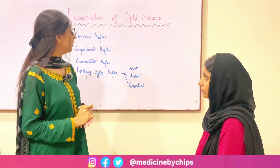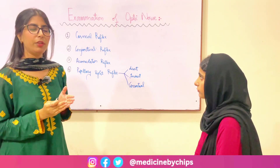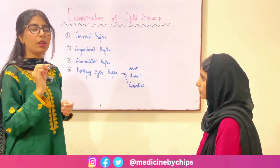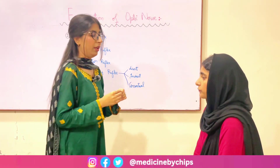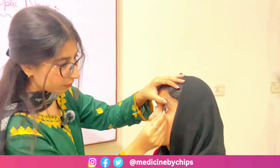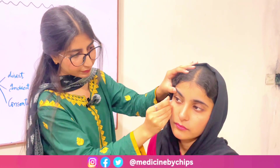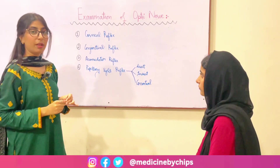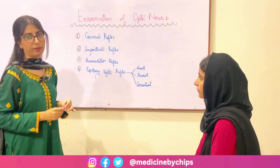Now starting with the second reflex, which is the conjunctival reflex. It is basically the same as the corneal reflex with only one difference: in the conjunctival reflex we have to touch the tip of the cotton not at the junction of the cornea and conjunctiva, but purely on the conjunctiva. The afferent and efferent for the conjunctival reflex are the same as for the corneal reflex — the afferent is the fifth cranial nerve and the efferent is the seventh cranial nerve.